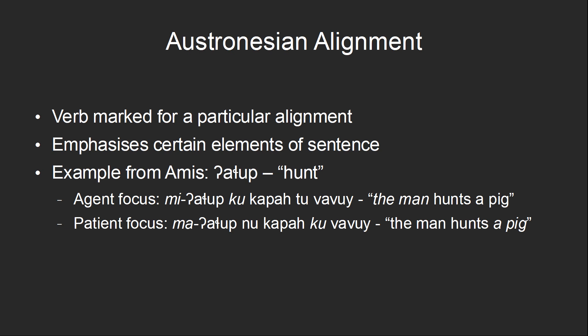The exact details vary somewhat among the different Austronesian languages, but most of them also have additional focus prefixes and suffixes to emphasize other elements of the sentence, such as the instrument — 'the man hunted the pig with a spear' — or location — 'the man hunted a pig in the forest.' This is all beyond the scope of this video, and Austronesian alignment could probably be a whole video on its own.